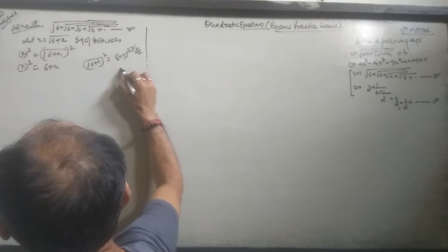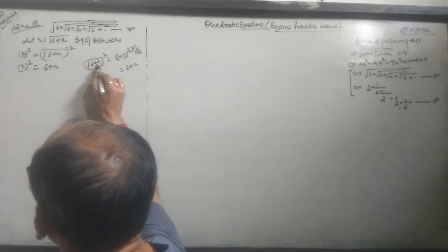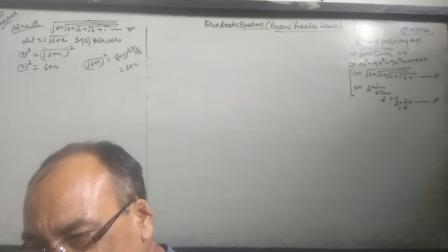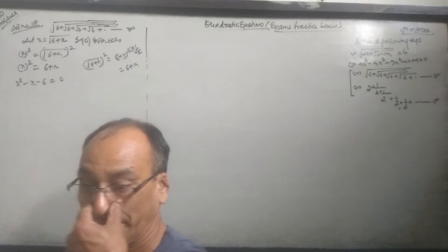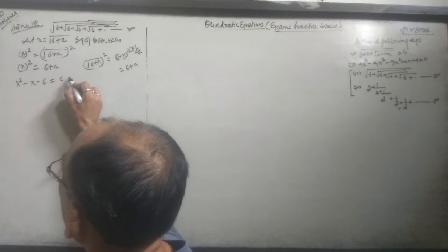Now squaring both sides, the root will be converted. You have to write: 6 + X. X² = 6 + X. X² - X - 6 = 0. Now what is the answer?